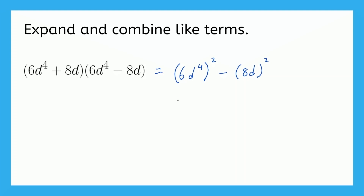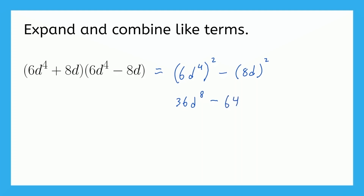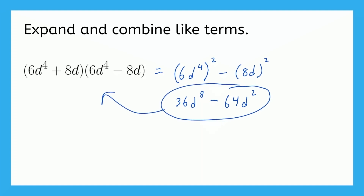So 6 squared is 36. And the properties of exponents tell us that when we have an exponent raised to an exponent, we multiply those two numbers. This is going to be d to the power of 4 times 2, or d to the eighth. Now we need to apply this squared to each part of the second term: 8 squared is 64, and d to the first squared is d squared. So our final answer is 36d to the eighth minus 64d squared. We got the product of those two original binomials without multiplying every term because we knew the shortcut.